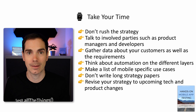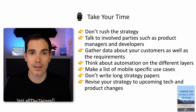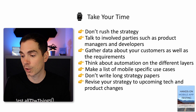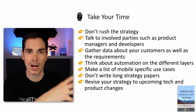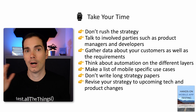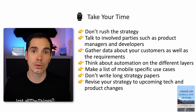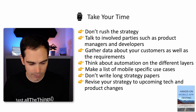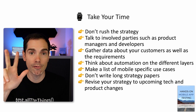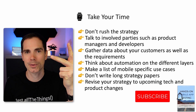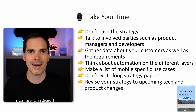Revise the strategy as technology and product changes come, otherwise you'll be seen as the bottleneck. If you'd like to learn more, you can get my book 'Hands-On Mobile App Testing' on Amazon or Leanpub — it covers everything from mobile devices and app types to strategy, test automation, and manual testing. Check the video description for the link. What do you think about this three-step mobile testing strategy? Leave a comment below, and as always, like, share, and subscribe. Have a great day!